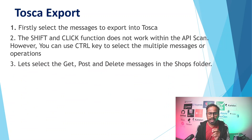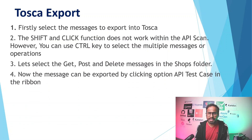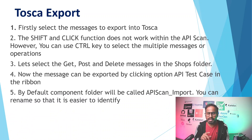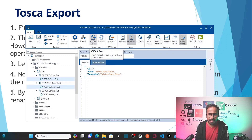Let us select the get and post messages in the shops folder. I am going to select get and post using Control. Messages can then be exported by clicking the API test cases option in the ribbon. By default, the component folder will be called API_import, and you can rename it to make it easier to identify. I selected these two, so now simply click API test cases to export.